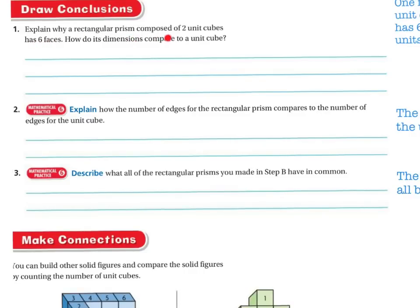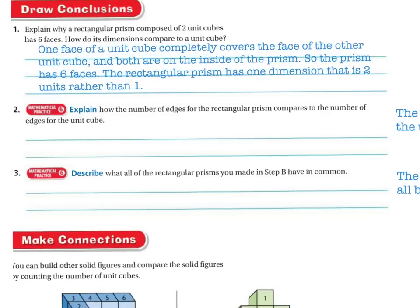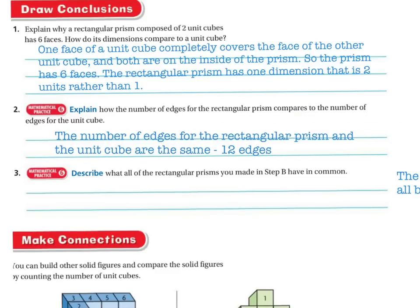Explain why a rectangular prism composed of two unit cubes has six faces. How do its dimensions compare to a unit cube? One face of a unit cube completely covers the face of the other unit cube, and both are on the inside of the prism, so the prism still has six faces. The rectangular prism has one dimension that is two units rather than one. The number of edges for a rectangular prism and the unit cube are the same — 12 edges.